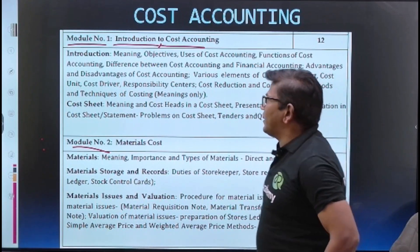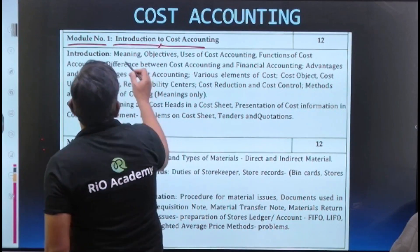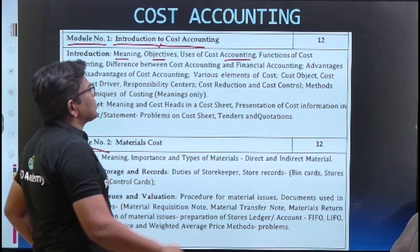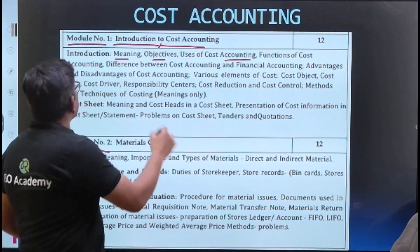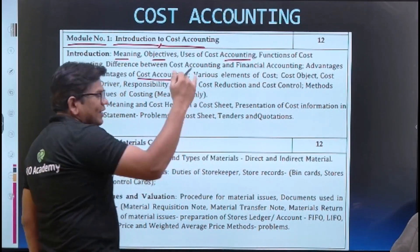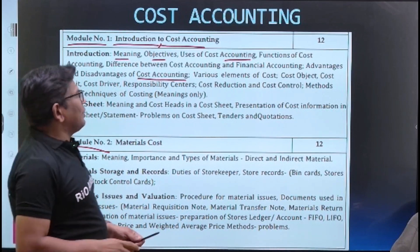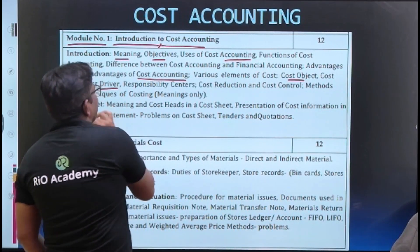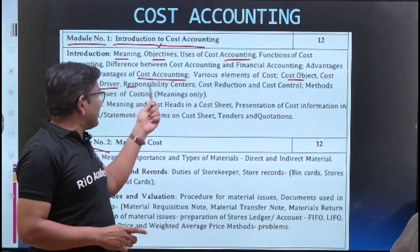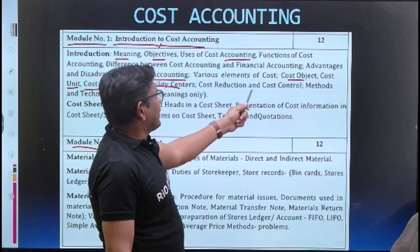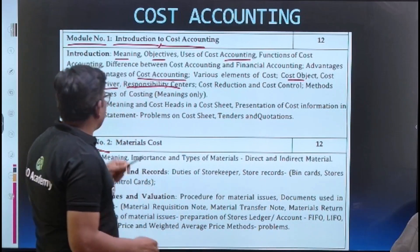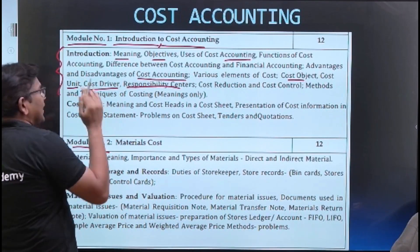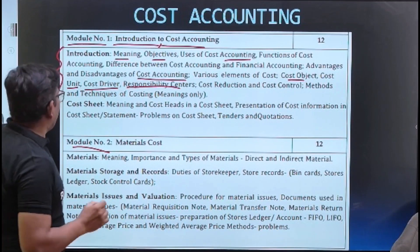In the theoretical part we have: meaning, objectives, and uses of cost accounting; functions of cost accounting; differences between cost accounting and financial accounting; advantages and disadvantages of cost accounting. We also cover various elements of cost — cost object, cost unit, cost driver, responsibility center, cost center — all theoretical questions. Plus cost reduction and cost control methods and techniques.